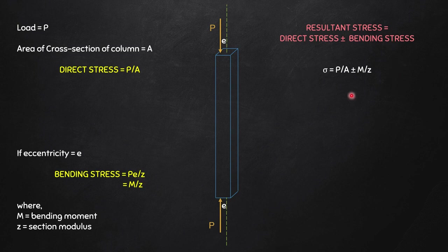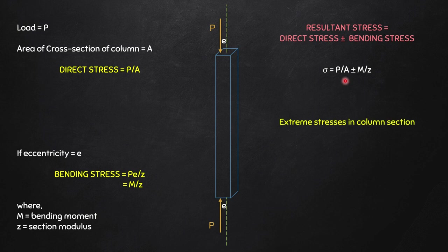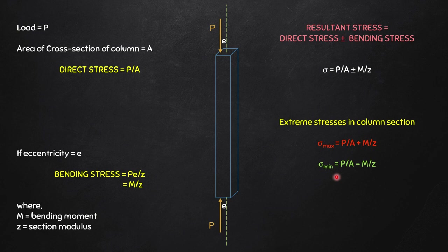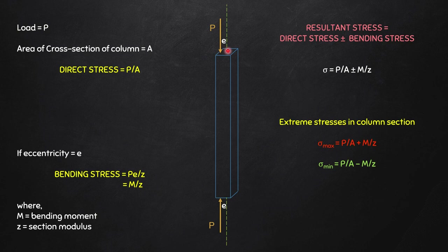We are mostly concerned with the resultant stress: σ = P/A ± M/Z. The maximum stress is σ_max = P/A + M/Z, and the minimum is σ_min = P/A − M/Z. The variation between these two extremes is linear across the section. If the load acts on the left side, σ_max occurs at the left end and σ_min at the right end. P, A, and Z are known from the loading and geometry.